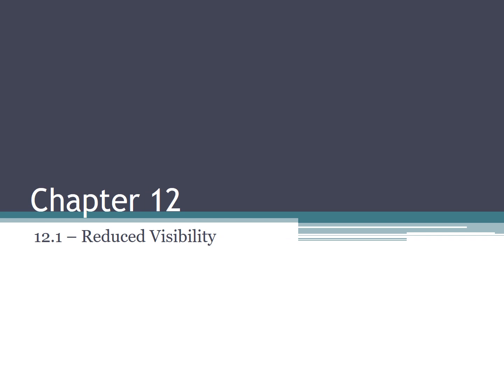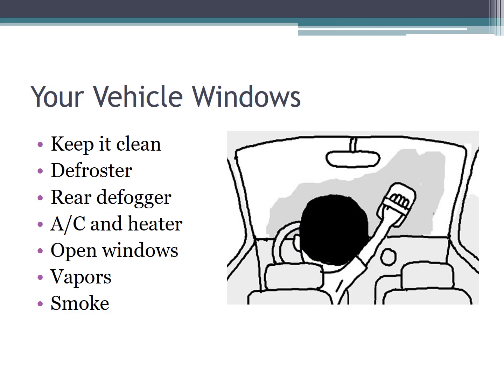Chapter 12 is all about reduced visibility. We're going to start with your vehicle window — you need to keep it clean, know how to use your defroster and defogger. Usually cars have a rear defroster; trucks or SUVs usually don't. You need to know how to use your AC and heater, how to open your windows, and how to keep your window clear in case of vapor, smoke, or anything building up inside your car.